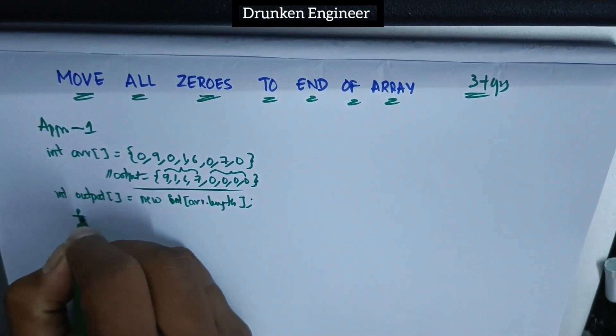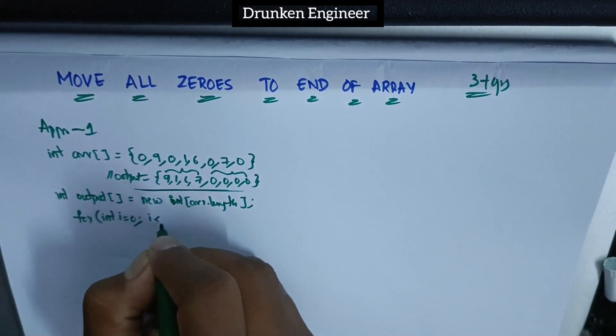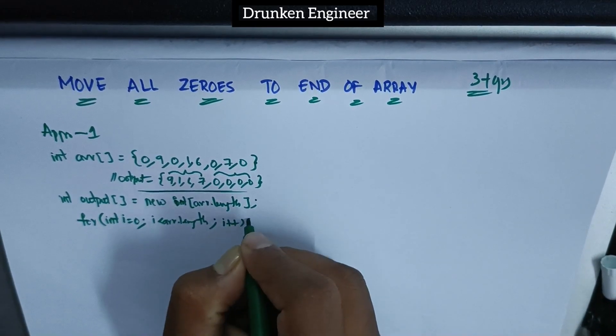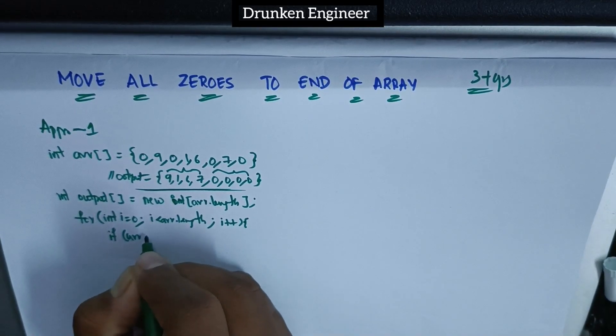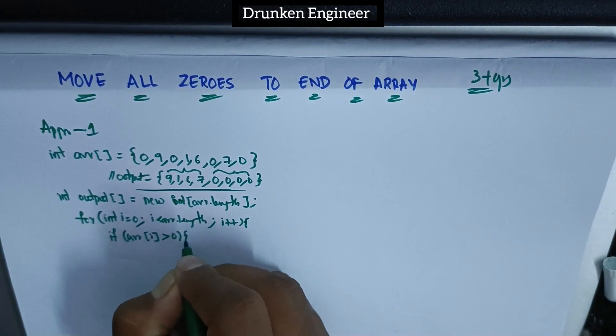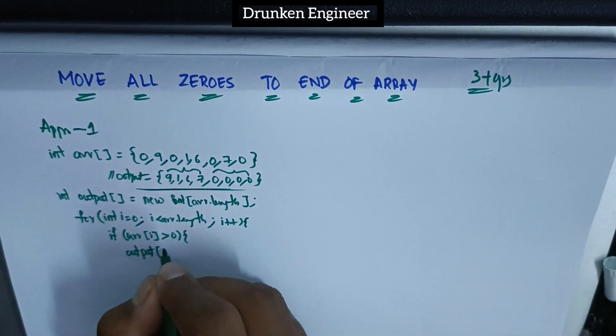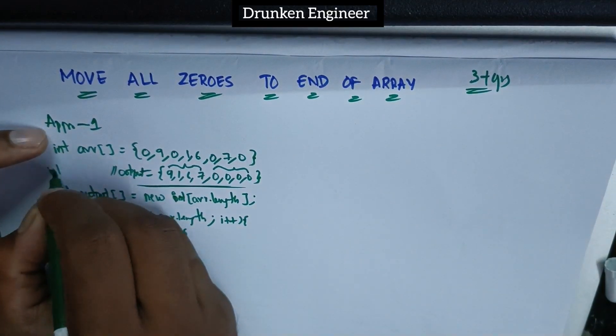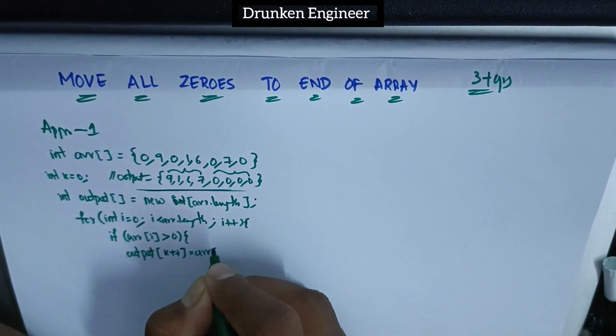I'll use a for loop - this is the traditional way. Int i equals zero, i less than array length, i plus plus. If the array at i position is greater than zero, I'll add it to the output. Take a variable k, initialize int k equals zero. Output at k plus plus equals arr of i.